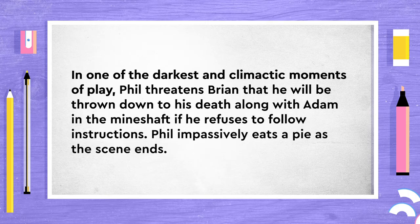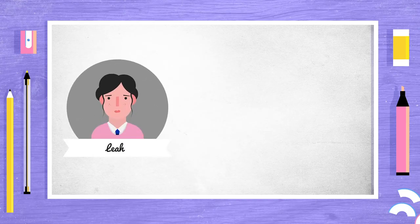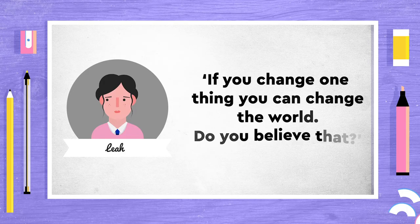Phil impassively eats a pie as the scene ends. Scene 4 is back to Leah and Phil in their field. Leah feels as if she's experiencing déjà vu — caught in a meaningless cycle of repetition, and that all of humanity is experiencing a similarly meaningless existence. This links to the nihilistic outlook on life prevalent throughout the 20th and 21st century where people struggle to find any meaning or goal to their lives. Throughout, Phil is completely indifferent — however, he surprisingly answers with a monosyllabic 'no' when she makes her most powerful statement: 'If you change one thing, you can change the world. Do you believe that?'